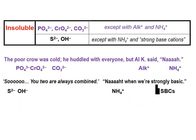Let's look at ions that typically form insoluble compounds. At the top of the screen we have the phosphate ion, the chromate ion, and the carbonate ion. Those form compounds that are insoluble, unless the compounds they form have alkali metal ions or the ammonium ion. Which, right in the middle of the screen in purple, brings me to the next mnemonic: 'The poor crow was cold. He huddled with everyone, but Al-K said, nah.' If you huddle with somebody, you're bonding with them. So the phosphate, chromate, and carbonate ions tend to huddle — they tend to clump. But Al-K doesn't want to huddle. Any alkali metal ion with these three won't be insoluble; it'll be soluble. Same with the ammonium ion.